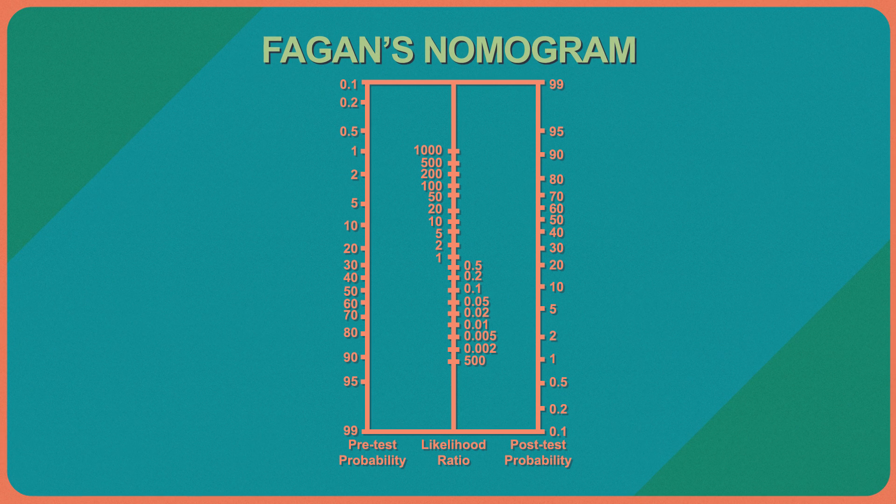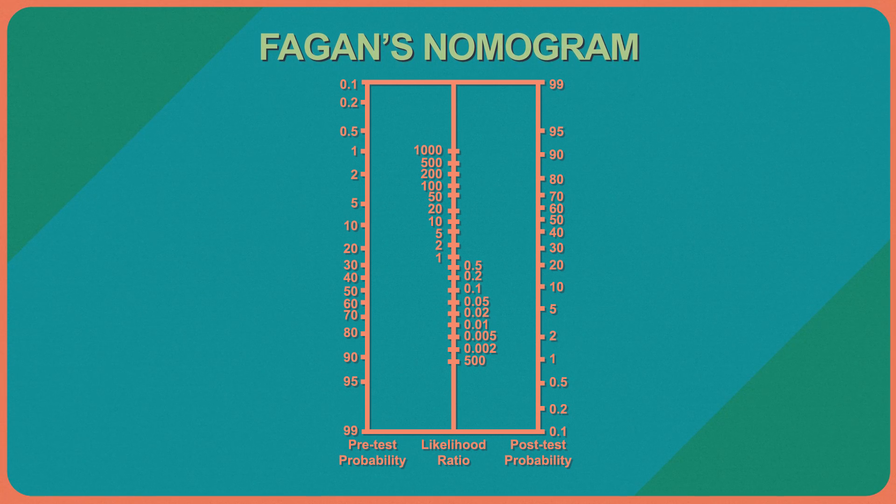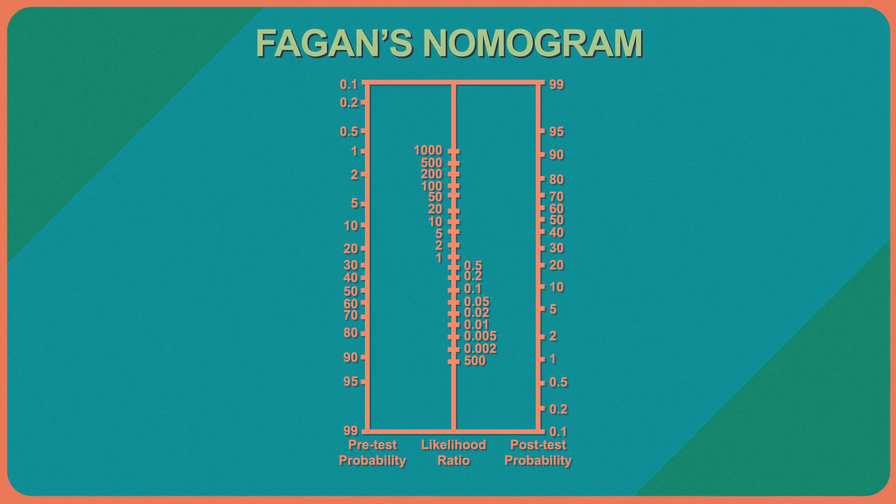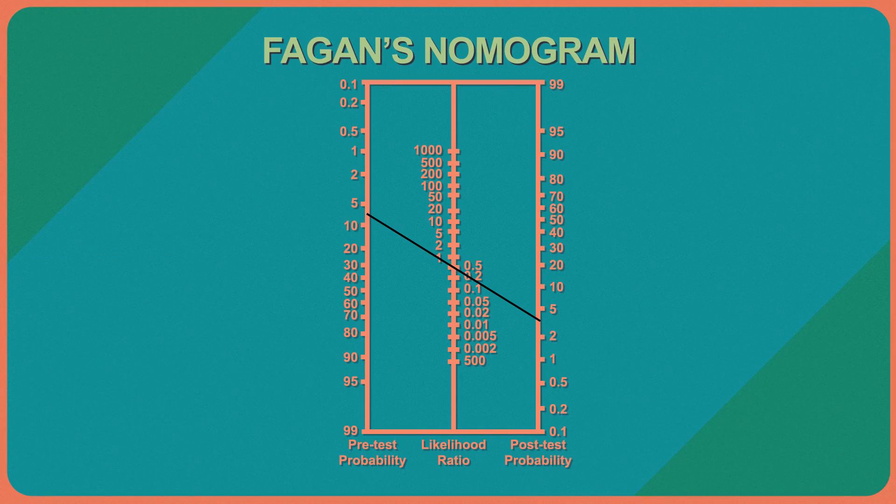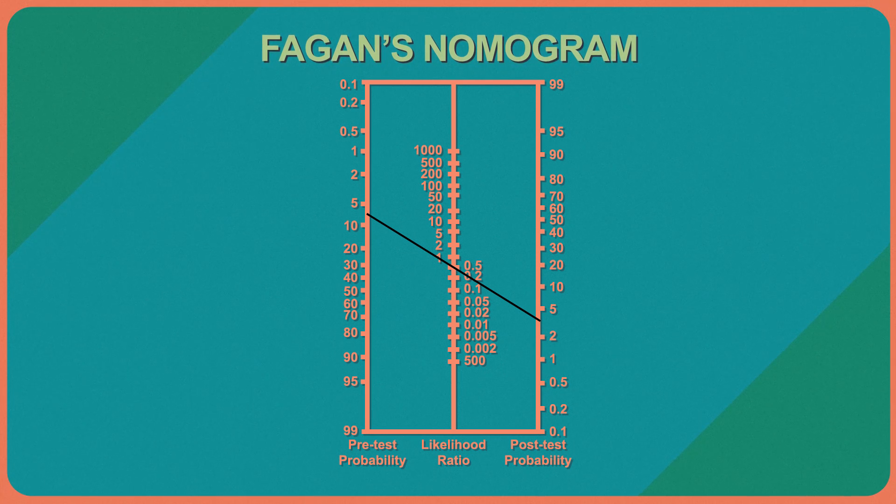This is a Fagan's nomogram. You start by finding your pre-test probability on the left, then you draw a straight line through the likelihood ratio, and wind up at the post-test probability. Once you know the likelihood ratio of a test, it's easy to use. For the mammogram, the positive likelihood ratio was 8.9. Drawing the line from 0.5% through 8.9 gets us to the about 4% we calculated. You can do this for any pre-test probability, and also for a negative mammogram with a likelihood ratio of 0.2. There are studies which list the likelihood ratios of many tests, and the Centre for Evidence-Based Medicine in Toronto has tables of them at their website, linked below.